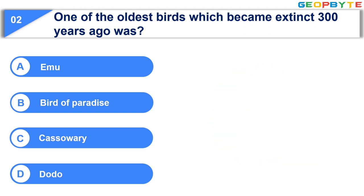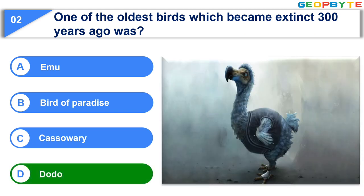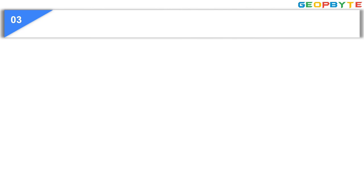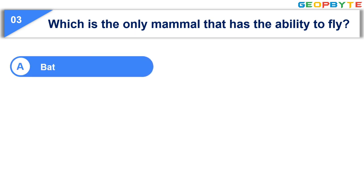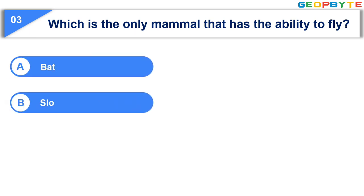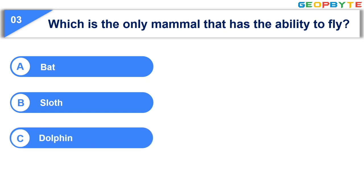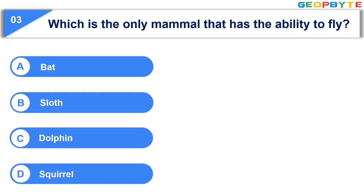Your time is up and the correct answer is Option D: Dodo. Moving to the next question: Which is the only mammal that has the ability to fly? Option A: Bat. Option B: Sloth. Option C: Dolphin. Option D: Squirrel. Your time starts now!